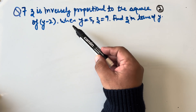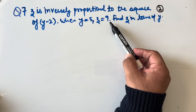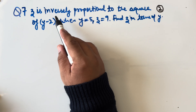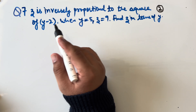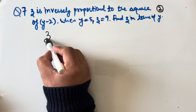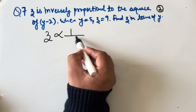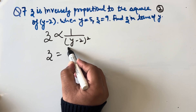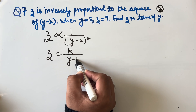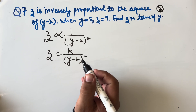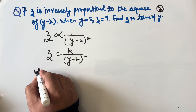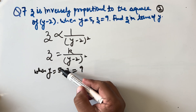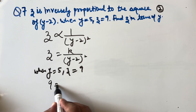It has been given that z is inversely proportional to (y − 2)², so z = k/(y − 2)². We are given that when y = 5, z = 9. So we substitute z = 9 and y = 5 into the equation.